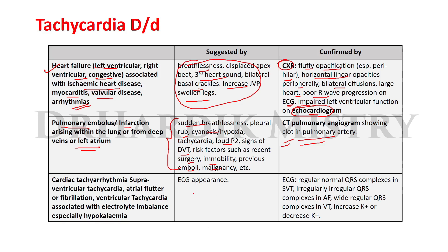When tachycardia has a specific ECG appearance — such as regular normal QRS complexes in supraventricular tachycardia, irregularly irregular QRS complexes in atrial fibrillation, or wide regular QRS complexes in ventricular tachycardia — along with increased or decreased potassium levels, then we can say it is due to cardiac tachyarrhythmia: supraventricular tachycardia, atrial flutter or fibrillation, or ventricular tachycardia associated with electrolyte imbalance, especially hypokalemia.